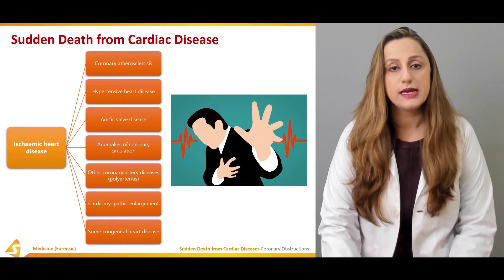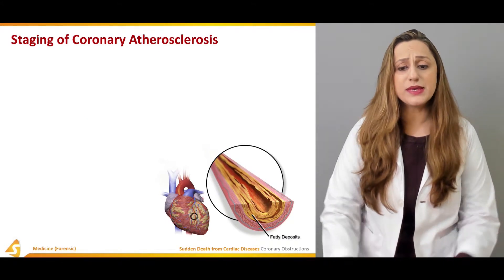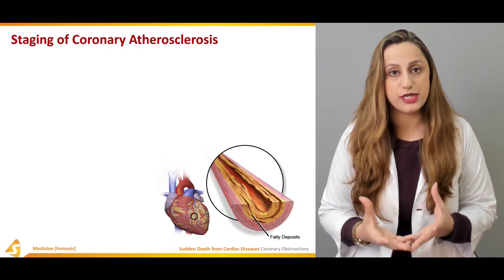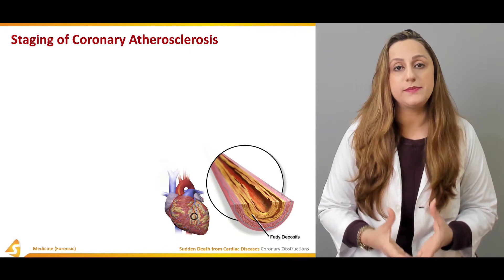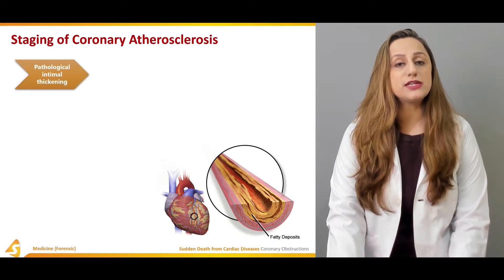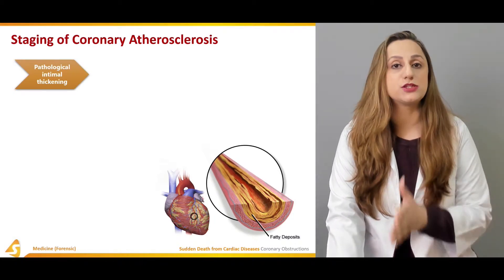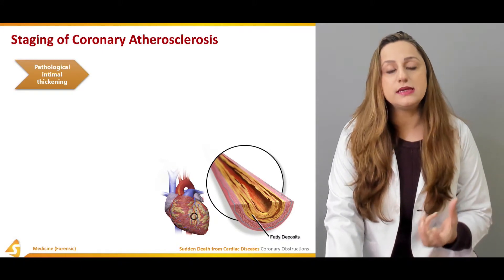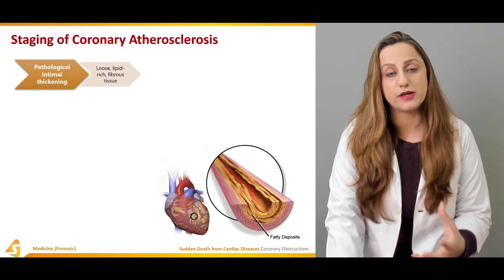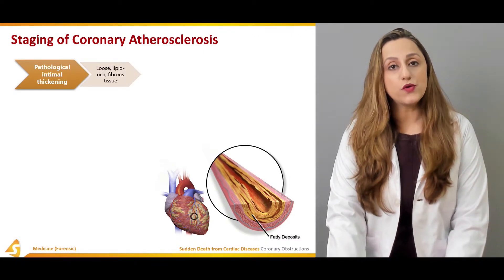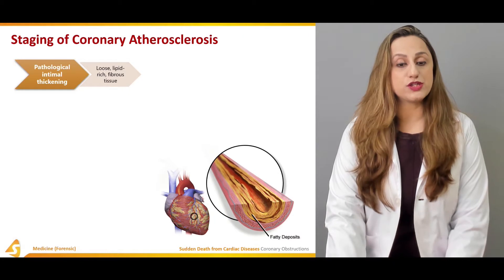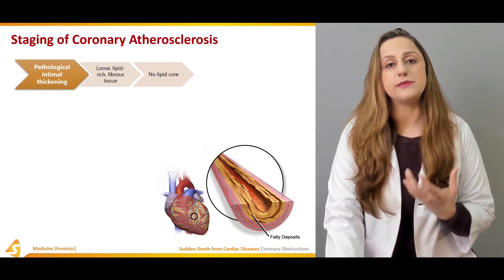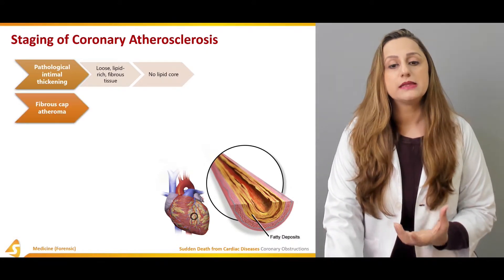As seen in this diagram, fatty deposits in the coronary vasculature compromise blood flow to the cardiac muscle. Staging of atherosclerosis is important. The first stage is pathological intimal thickening, characterized by intimal thickening with loose lipid-rich fibrous tissue. There is no lipid core visible on microscopy or gross examination.